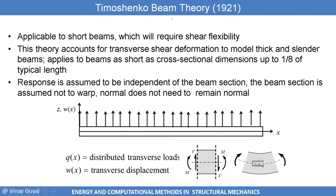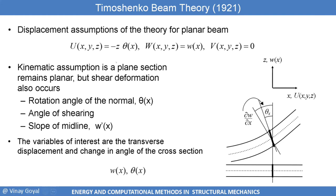Timoshenko theory works well for beams with a length-to-thickness ratio of about 1 over 8 or larger; for shorter beams you want 3D elements. The response is assumed to be independent of the beam section, the beam section is assumed not to warp, and the normal does not have to remain normal. You can see in the diagram how the cross section is no longer perpendicular to the neutral axis — there is a slope plus an additional angle. That's the key point of this theory, developed by Timoshenko in 1921.